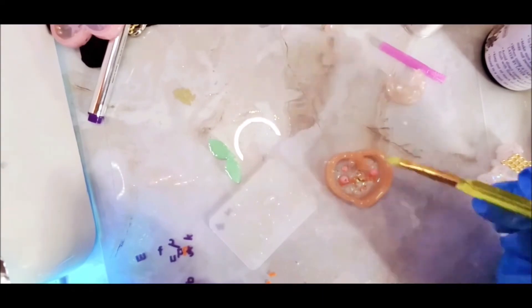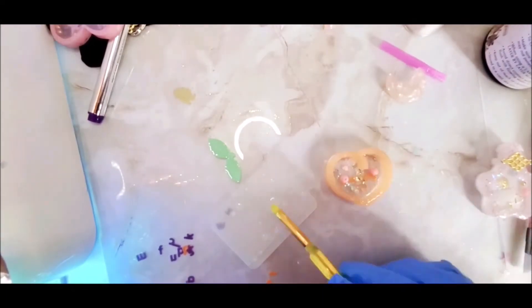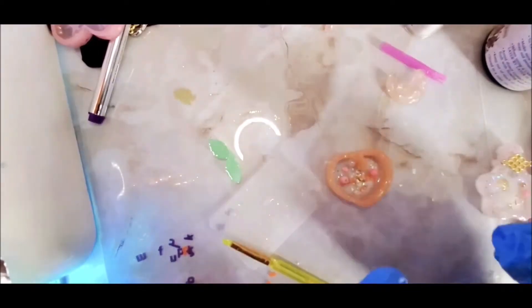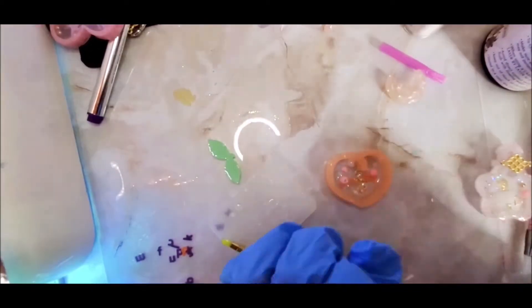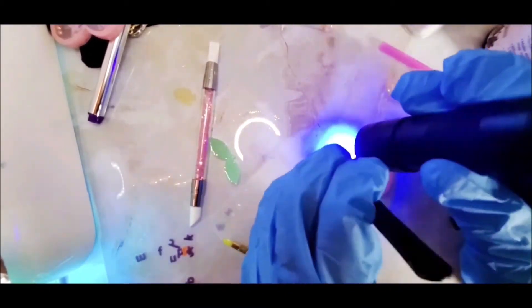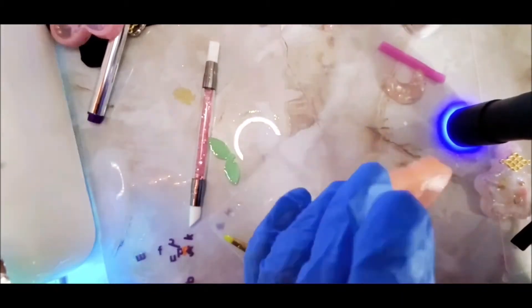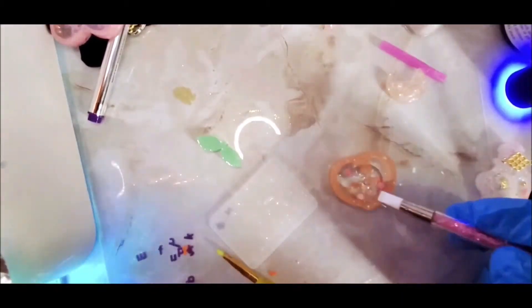I'm taking the UV resin that I put on the silicone mat and I'm outlining the outside of the piece. I'm taking my other shaker film and I'm putting it on top and then I'm going to press it down a little bit and cure it. See I took my tweezers and I pressed it down to make sure that there is a secure bond around the entire piece.